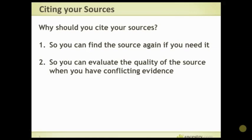You also want to be able to evaluate the quality of the source when you have conflicting evidence, or when you're looking at somebody else's tree. If someone has no source, you don't know where that information came from — it may be excellent information, but you don't know if it's valid. If your source is somebody else's family tree and you've got another source which is an actual birth certificate, you can quickly look at those and decide which one is the better source. Because there's lots of conflicting evidence out there — the documents we look at were not really intended for genealogical purposes — we have to make a lot of decisions. So this is why you cite: to find it again, and to evaluate the quality.